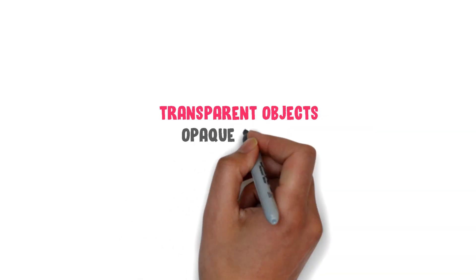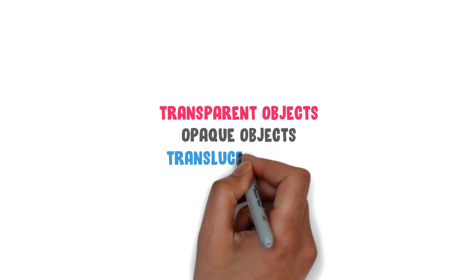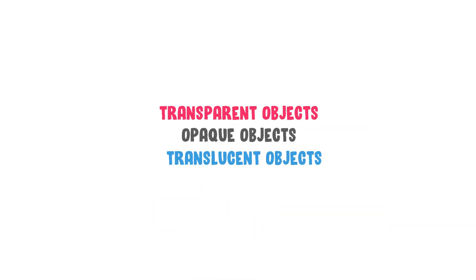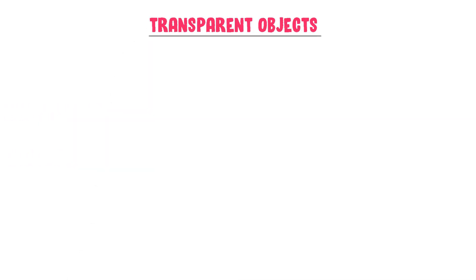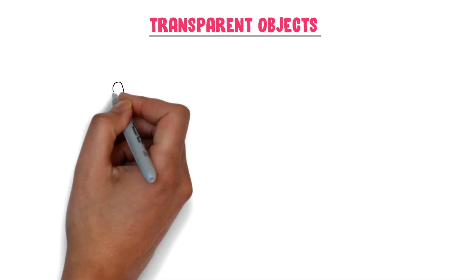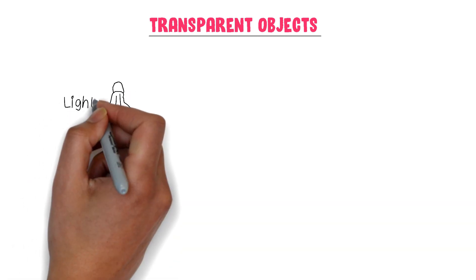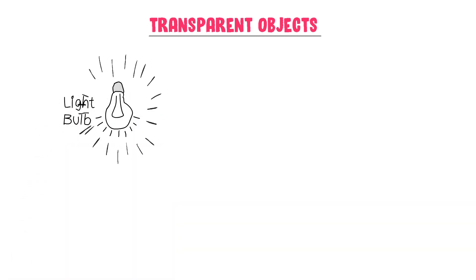What is the difference between transparent, opaque, and translucent objects? Well, firstly, let me teach you transparent objects. For example, consider a luminous object like a bulb.